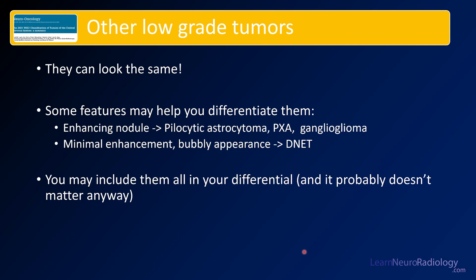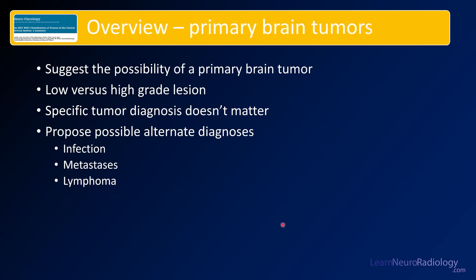Many of these low-grade tumors are going to look the same. Some features may help differentiate them — the enhancing nodule is more common in pilocytic astrocytoma, PXA, and ganglioglioma. The classic bubbly appearance is a favored test question — you'd call that a DNET or dysembryoplastic neuroepithelial tumor. When you see these primary brain tumors, you want to suggest that they're a primary brain tumor and whether it's a low versus high-grade lesion. In many cases the specific tumor doesn't matter. When an alternate diagnosis exists — such as infection, metastatic disease, or lymphoma — you definitely want to suggest that, as it can significantly change management. We'll talk about that more in the video on mimics.